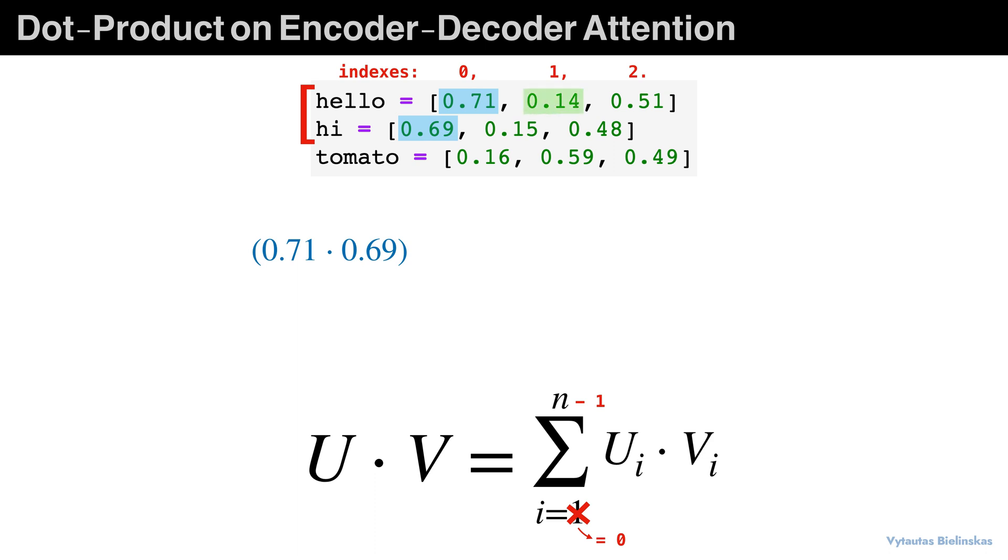And then we are doing the sum of all these here: 0.14, 0.15 as the index one from hello and hi. And lastly 0.51, 0.48 as the index equal to two from hello and hi.